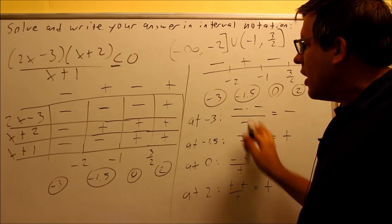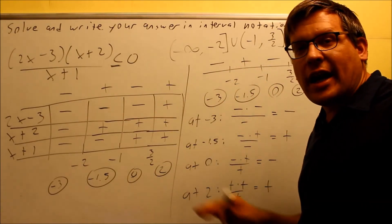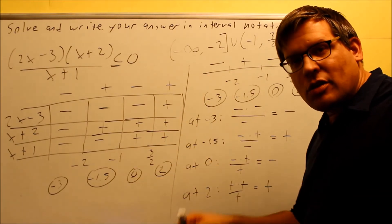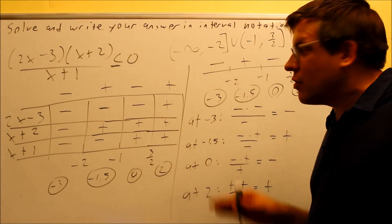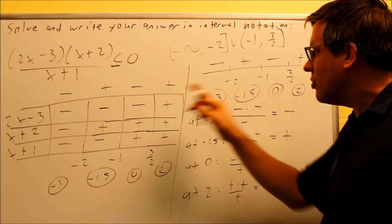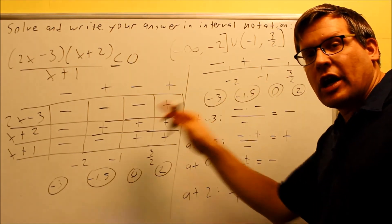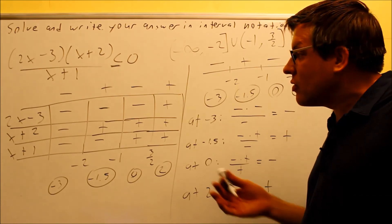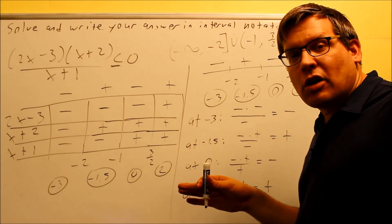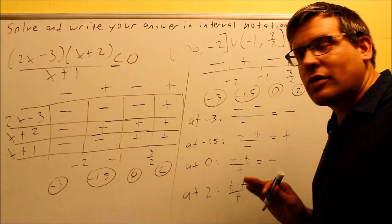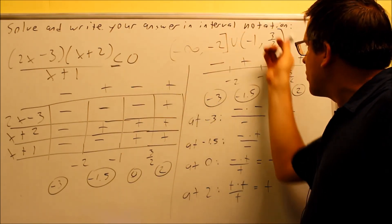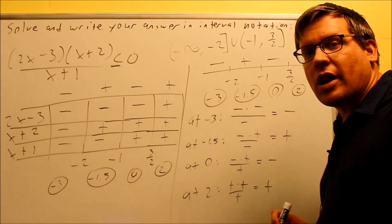You get these alternating signs. Whatever method you want to use is fine. I recommend just picking one method and sticking to it and doing all the problems that same way. Instead of trying to learn two different ones, I want to give this as an option to you so you can do either one. But in reality, you should just pick one that you're comfortable with and do all the problems exactly the same way, because you'll end up getting the same sign configuration, which will result in giving you the same interval as your answer.